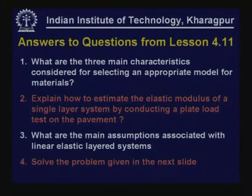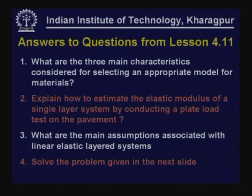What are the main assumptions associated with a linear elastic layer system? The linear elastic layer system assumes it comprises a number of layers, each layer characterized by its thickness, elastic modulus value, and Poisson ratio value. All the n−1 layers are infinite in horizontal extent and the last layer is infinite in both directions.